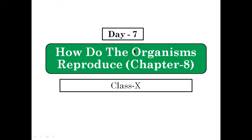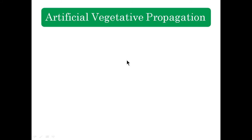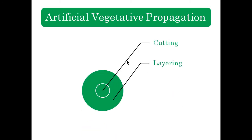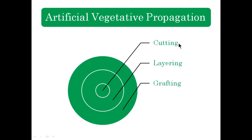Hello everyone, students. It's day 7, and today we start with artificial vegetative propagation, in which new plants are produced from vegetative parts of plants but by artificial methods. There are three methods of artificial vegetative propagation: cutting, layering, and grafting. Let's discuss them one by one.